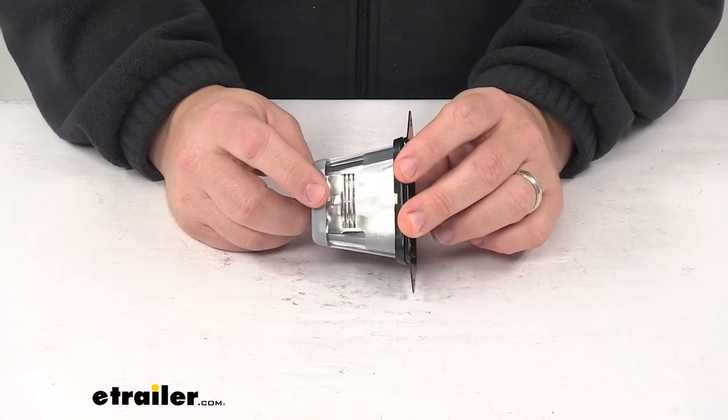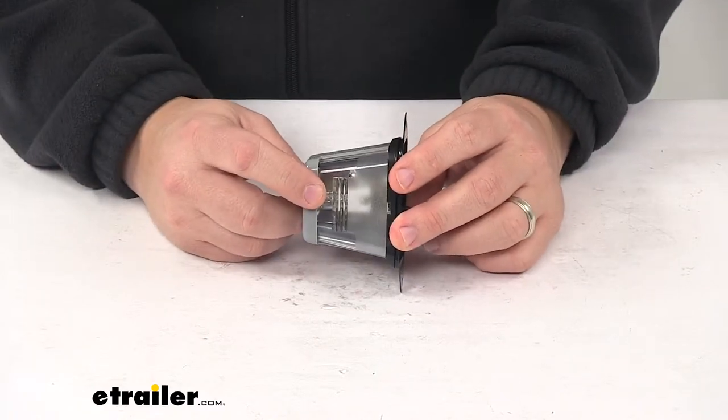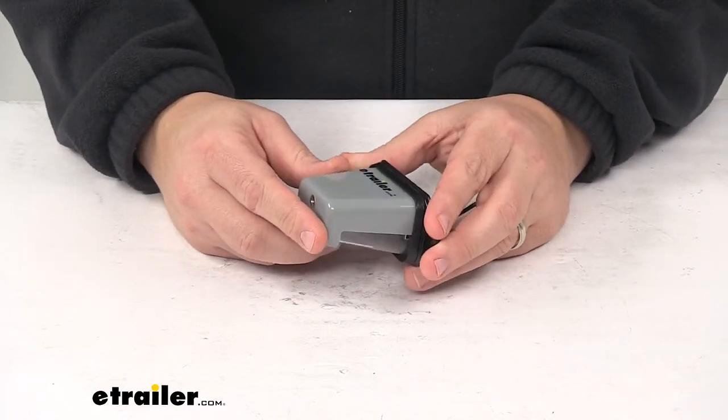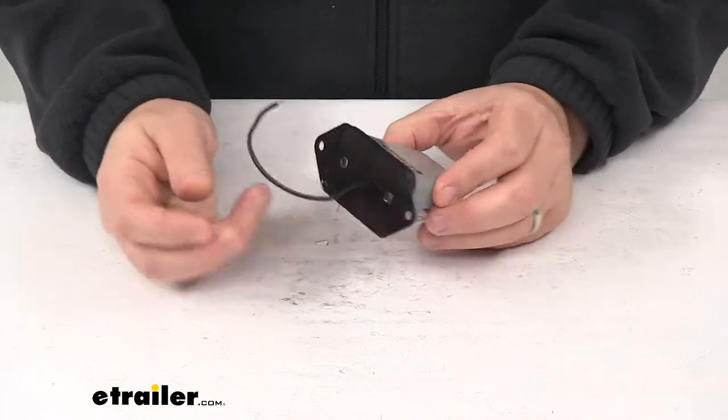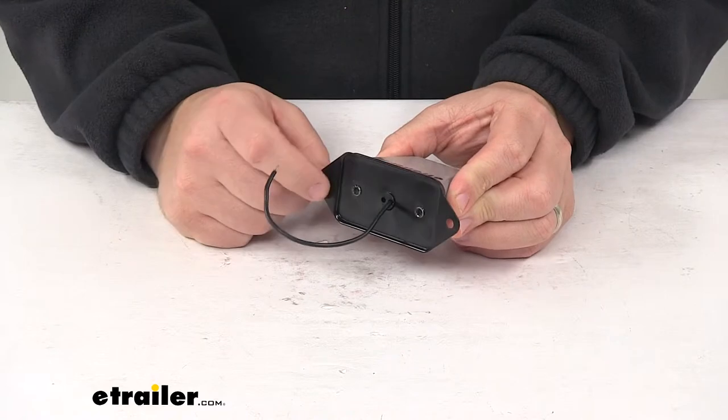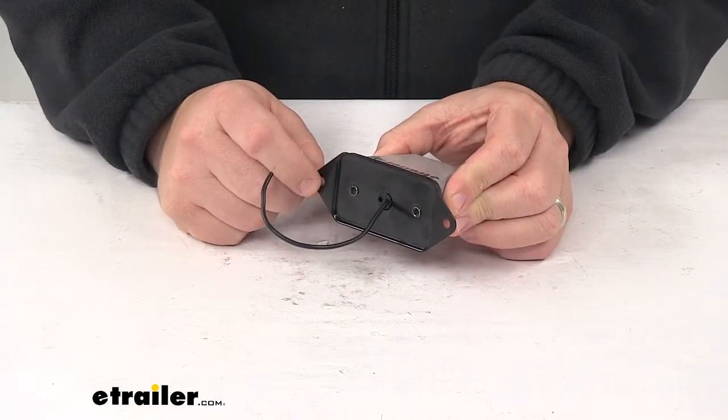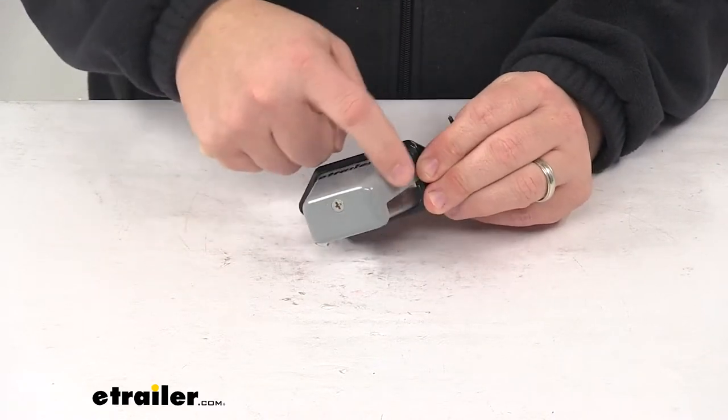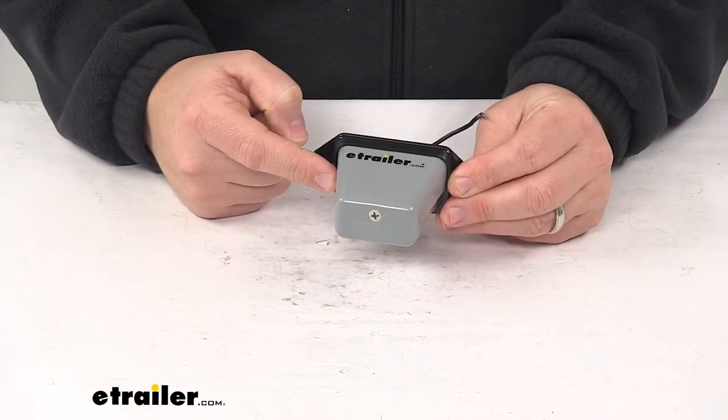It contains one incandescent bulb. Bulb number is 168, and that is replaceable if and when needed. The base, which is this black portion here, is made from a durable steel construction and has a nice powder-coated finish to help resist rusting and corrosion. The housing, which is the gray portion, is plastic.